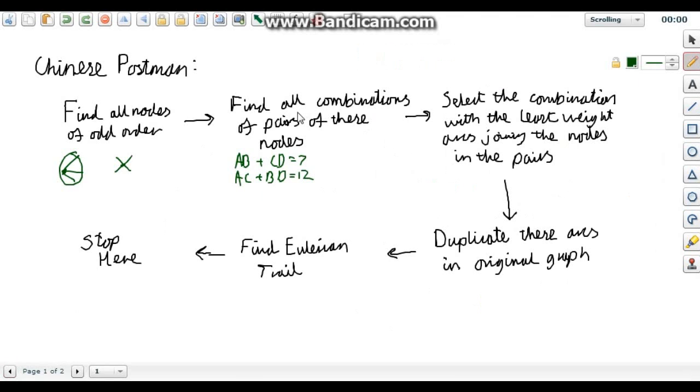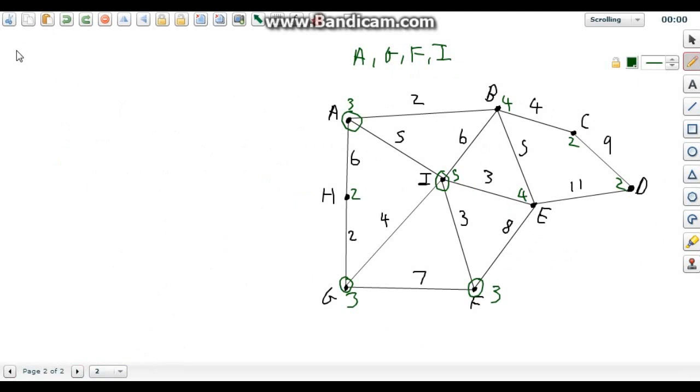So now we need to find all combinations of pairs of these nodes. So we would have A can be with either G or it can be with F or it can be with I.